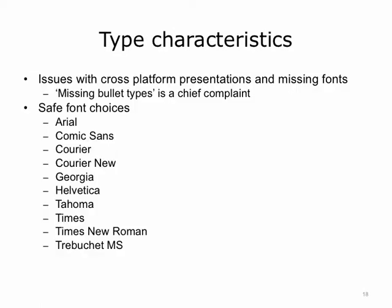Cross-platform presentations — sharing between Mac and Windows — present a different problem. The fonts you used in a PowerPoint presentation on one platform might not be available on the viewer's computer. If the font is not available, PowerPoint will open the presentation and substitute the original font for a similar font on the user's computer. This usually shows up as missing or misaligned bullets and text. The best way to avoid this problem is to not use Mac or Windows-specific fonts. Safe fonts to choose are Arial, Comic Sans, Courier, Courier New, Georgia, Helvetica, Tahoma, Times, Times New Roman, and Trebuchet MS.